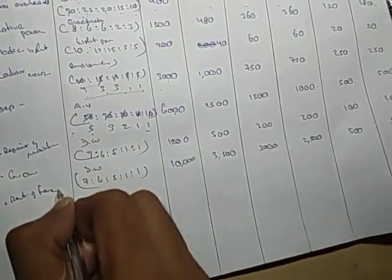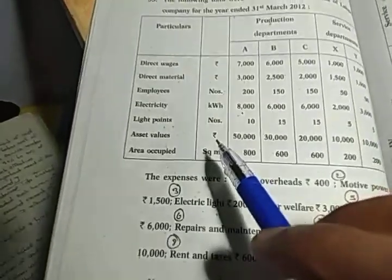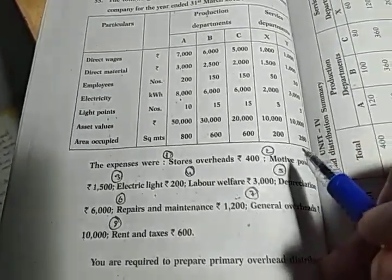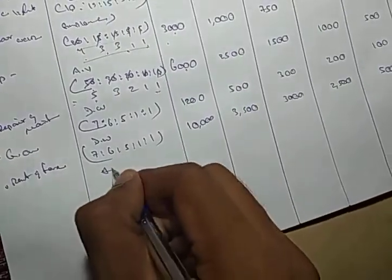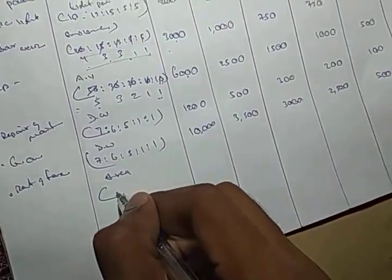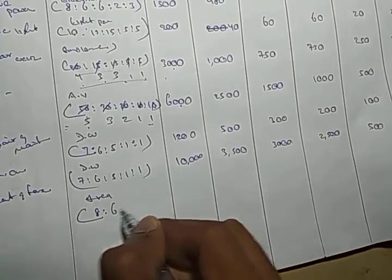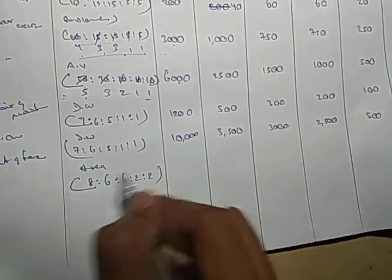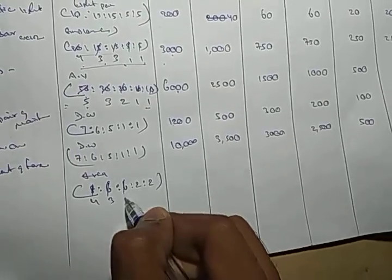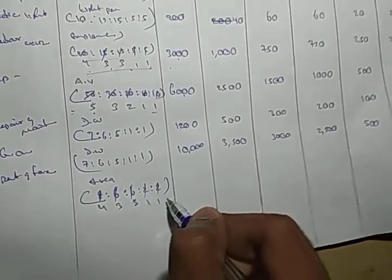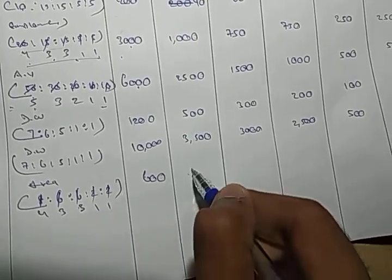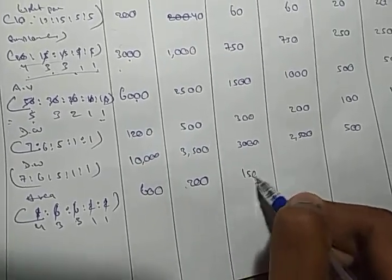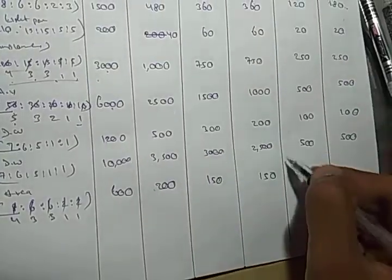Rent and taxes — the basis is area occupied: 800, 600, 600, 200, 200. Ratios: 4 is to 3 is to 3 is to 1 is to 1. Total 600 divided — first 200, next 150, next 150, next 50, next 50.